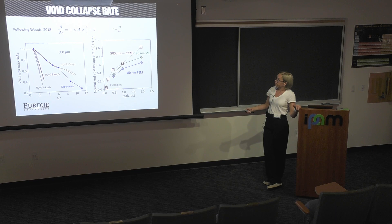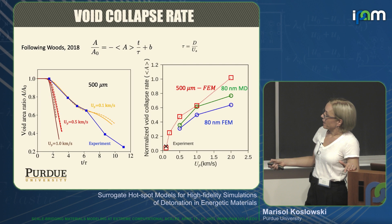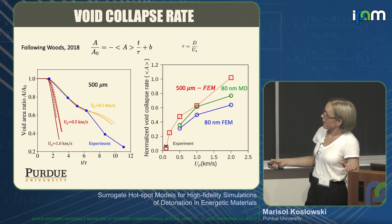We also compared the rate — the constant in the linear area-versus-time relationship — for different velocities and different void sizes, comparing finite element simulations, MD simulations, and the one experiment we have. The trend makes sense — we have very similar trends. Values do not perfectly agree, and we really don't know how much they have to agree or how strongly it should depend on void size.